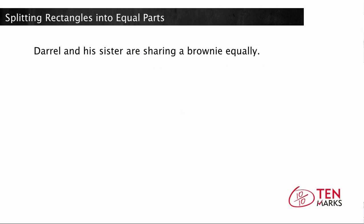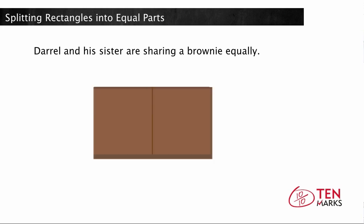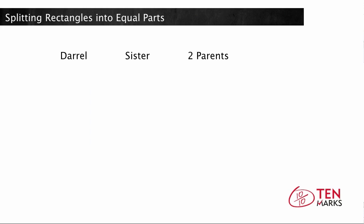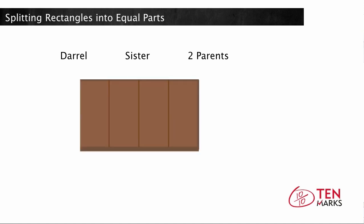Daryl and his sister are sharing a brownie equally. Each person gets one half. Now think about if Daryl had to share a brownie equally between his sister and his two parents. What part of the brownie would each person get? Since he has two parents, himself, and his sister, he needs to split the brownie evenly among four people. Each person gets one quarter.